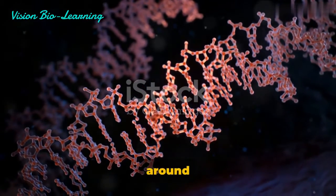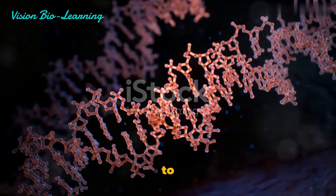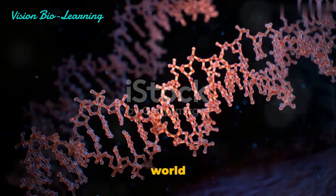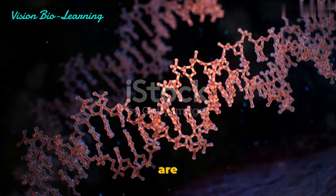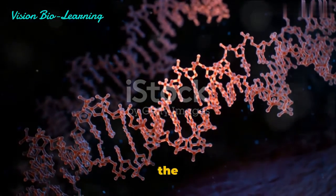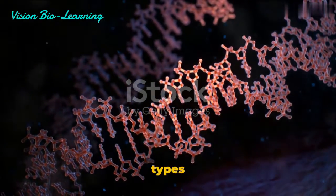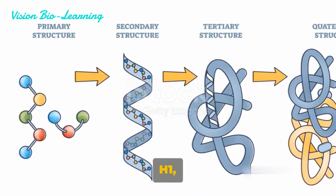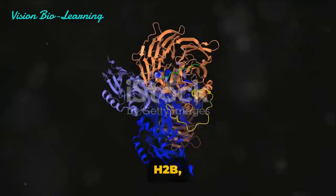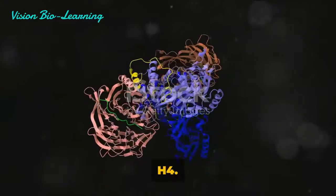Now, let's talk about the first level of DNA packaging, the nucleosomes. Picture a spool, around which threads are coiled neatly to maintain order and prevent tangling. In the world of chromosomes, histones are the spools, and DNA is the thread. There are five main types of histones: H1, H2A, H2B, H3, and H4.